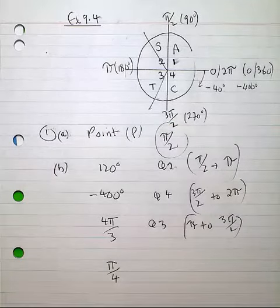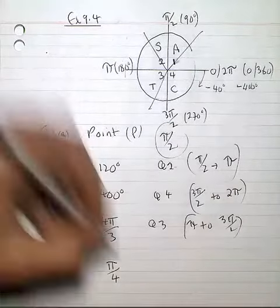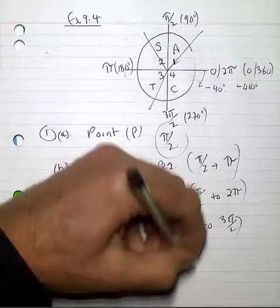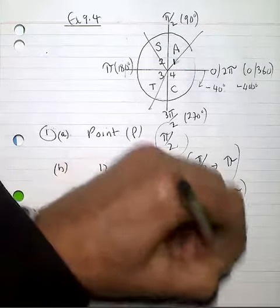And lastly, π over 4, halfway into quadrant 1, which is in the 0 to π over 2 quadrant.